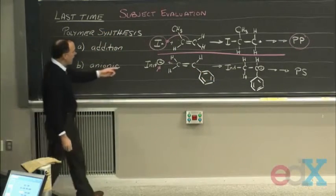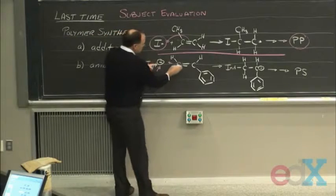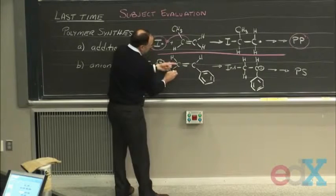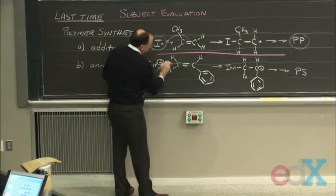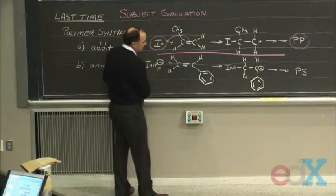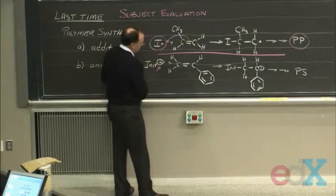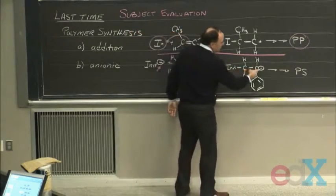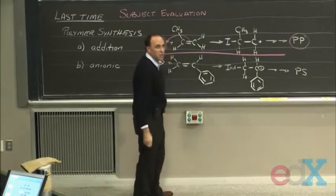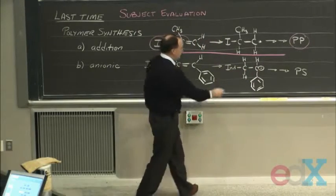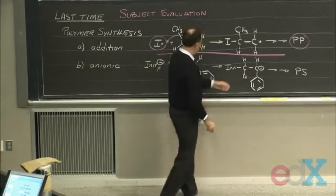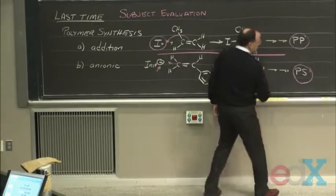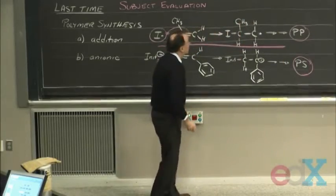And what happens here is this carbon is susceptible to this attack by a base. It donates this electron to this carbon. And then of course, that leaves this carbon with the extra electron. And now it's a base, and it can react with styrene, and that's how you make polystyrene.